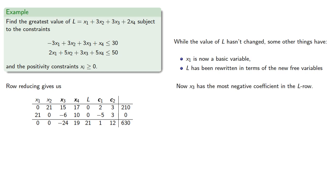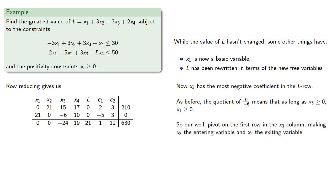Now, x3 has the most negative coefficient in the L row. And as before, this quotient with negative denominator means that as long as x3 is greater than or equal to 0, x1 will also be greater than or equal to 0. So we'll pivot on the first row in the x3 column, making x3 the entering variable and x2 the exiting variable.